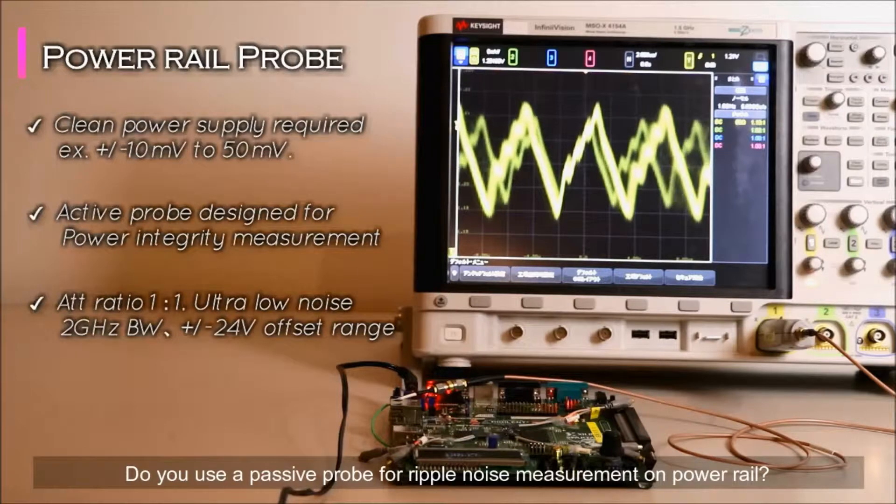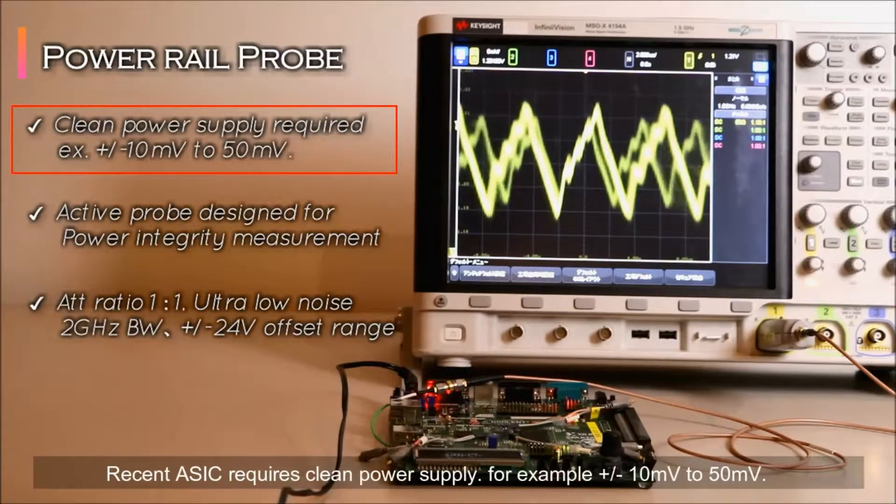Do you use a passive probe for ripple noise measurement on power rail? Recent ASIC requires clean power supply, for example, ±10mV to 50mV.